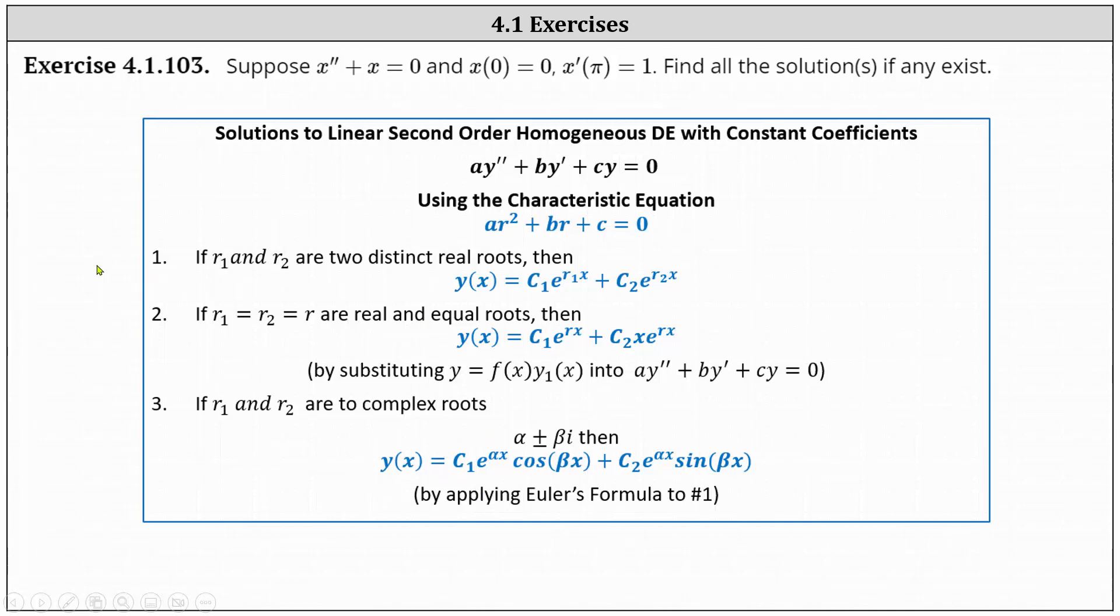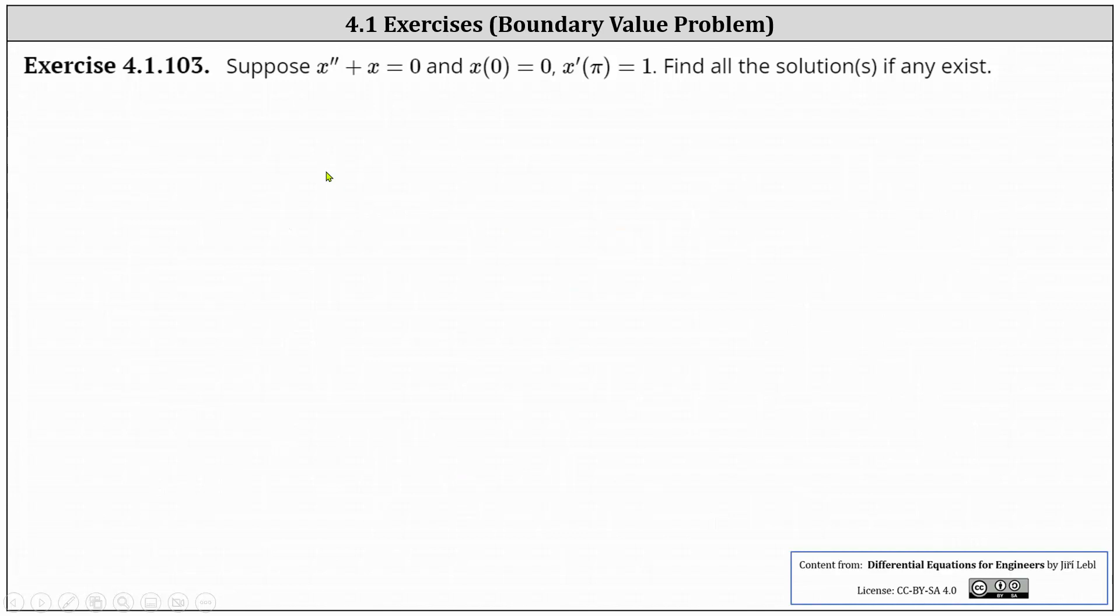So going back to our problem, notice the characteristic equation is r squared plus one equals zero. Solving for r, we have r equals plus or minus i. Because we have two complex solutions where alpha is equal to zero and beta is equal to one, the general solution is in the form of x of t equals a cosine t plus b sine t.